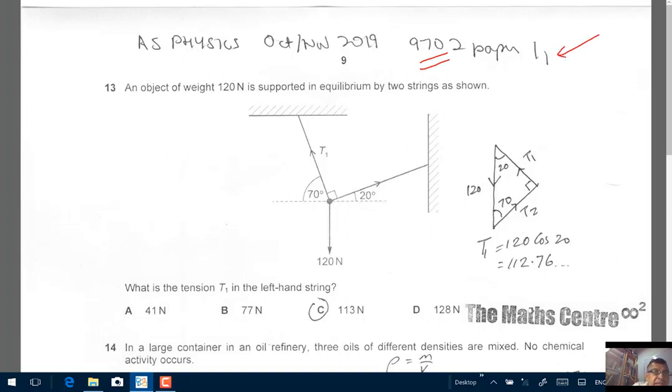Question 13. An object of weight 120 Newton is supported in equilibrium by two strings as shown. The important words: 120 Newton is the weight and equilibrium. And we're asked what is the tension T1 in the left-hand string? So we're going to label this T1 and we're going to label this T2 and we have the third force here, which is the weight, which is 120.